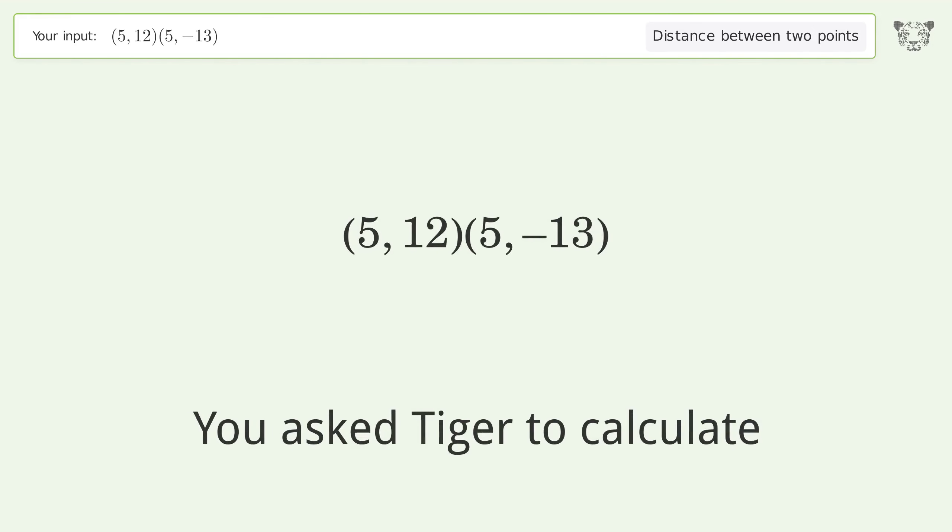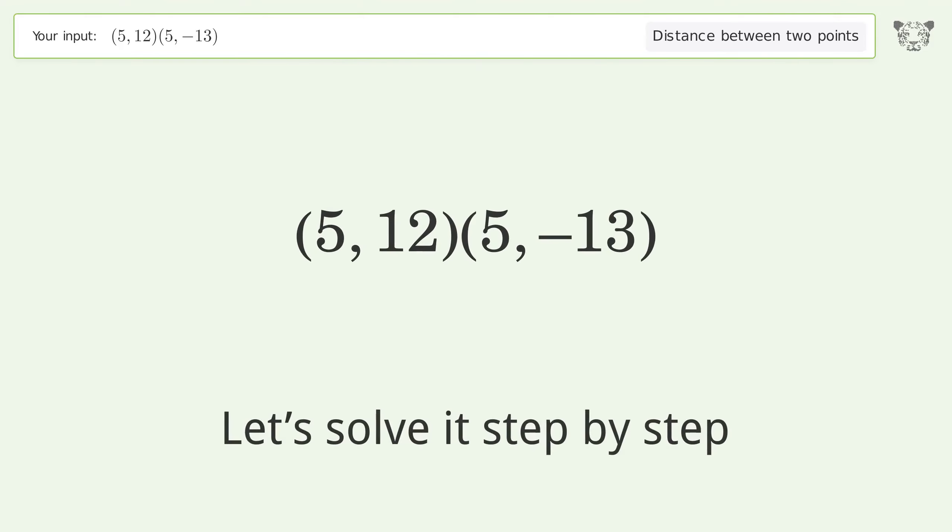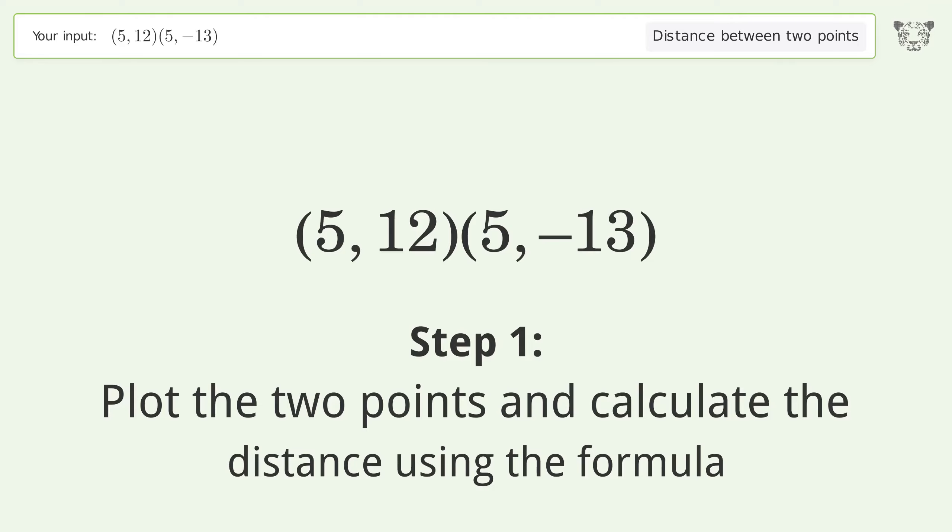You asked Tiger to calculate the distance between two points. The distance between the two points is the square root of 625, or 25. Let's solve it step by step. Plot the two points and calculate the distance using the formula.